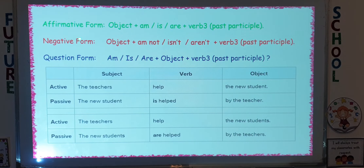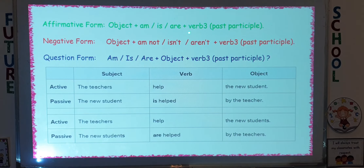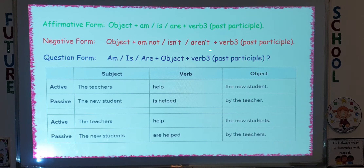Now we're going to compare the passive voice in affirmative, negative, and question forms. In the affirmative form: object + am/is/are + past participle (verb 3). In the negative form: object + am not / isn't / aren't + past participle of the main verb.